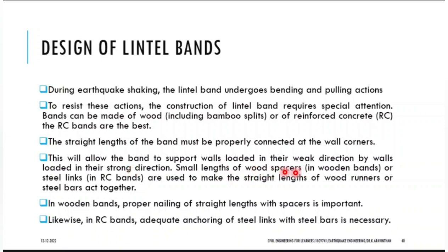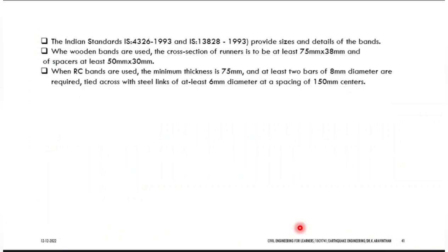Small lengths of wooden spacers are used in wooden bands, and steel links are used in RC bands. In wooden bands, proper nailing of straight lengths and spacers is important — similar to placing stirrups in reinforced concrete. RC bands require adequate anchoring of steel links with the necessary bars. The dimensions are given in IS-4326 and IS-13828, which provide the size and detail of bands.